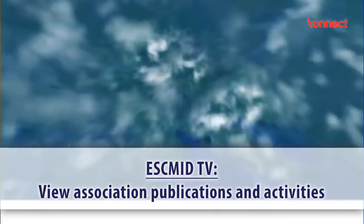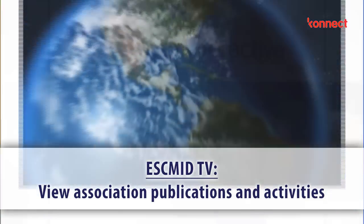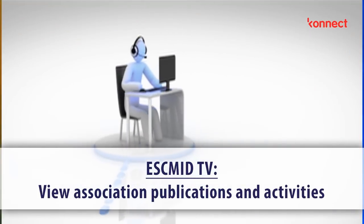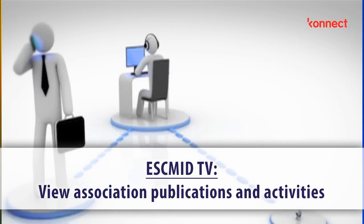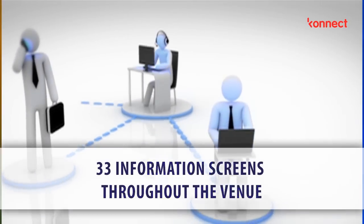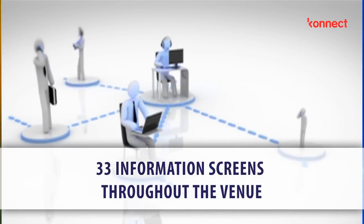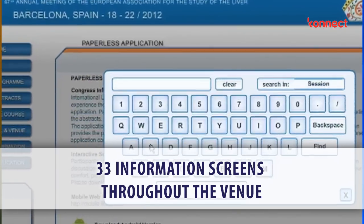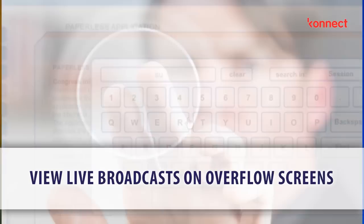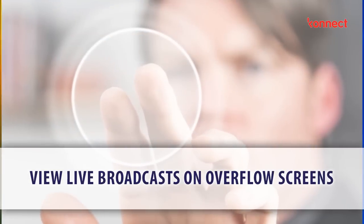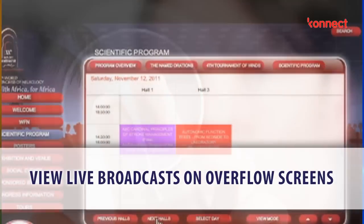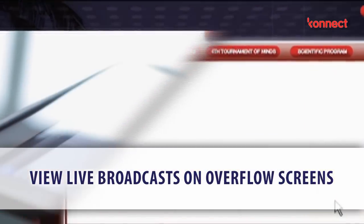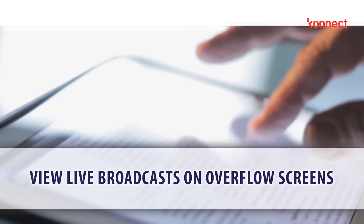Post-Congress, you can access information and watch Congress sessions from the Library on the association website. With 33 information screens throughout the venue you'll have full access to important information wherever you are. Overflow screens provide full live broadcasts of what is happening in the main session hall or other session halls.